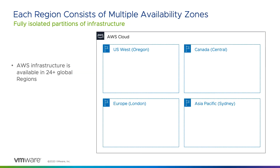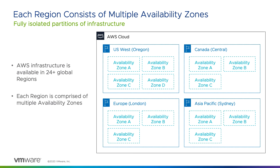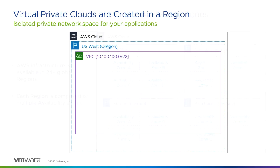Each distinct geographical AWS region consists of three or more availability zones. AZs are fully isolated partitions of infrastructure that are physically separated from each other with independent power and network connectivity. It's an AWS best practice to use multiple AZs in order to architect applications for resiliency, since an outage affecting one AZ would not likely impact another.